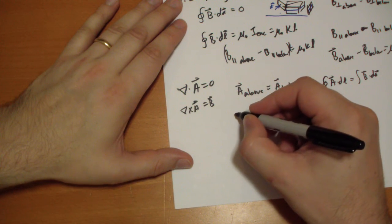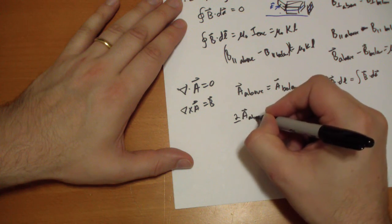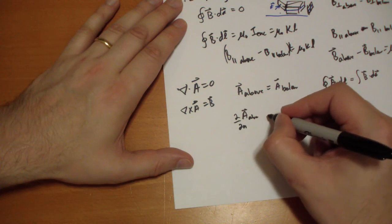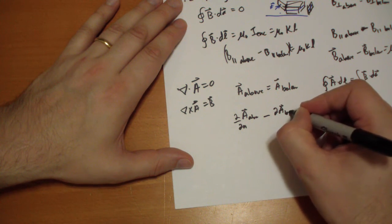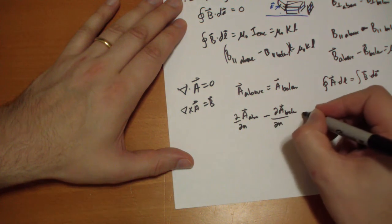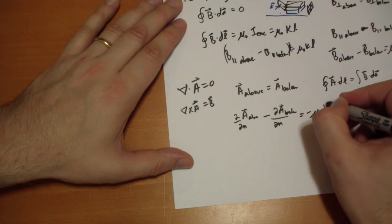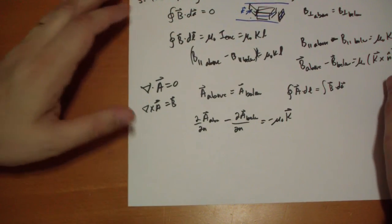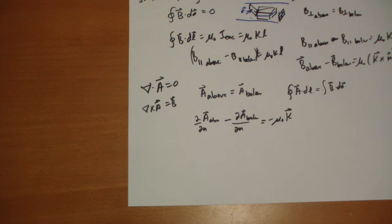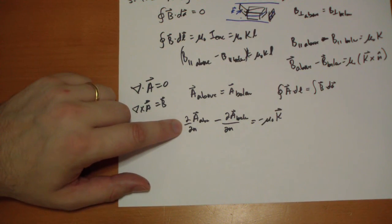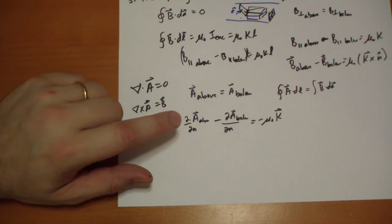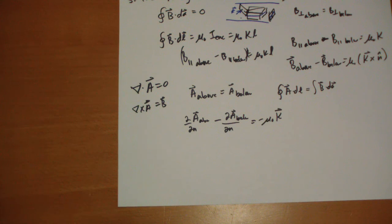However, the first derivative of A vector with respect to the normal above minus the first derivative of the A vector below with respect to the normal has to be equal to the current there. This is parallel to what we had with the potential in electrostatics. When you jumped, the first derivative, the potential's the same, it doesn't change when you jump, but the first derivative of the A vector does. So there's a nice little parallel there.